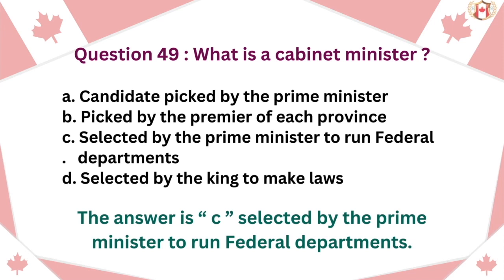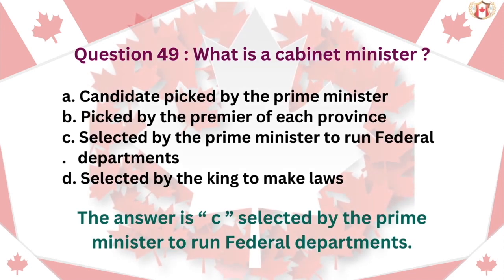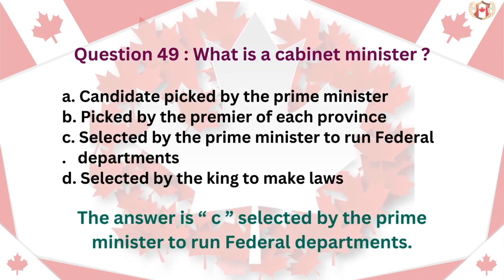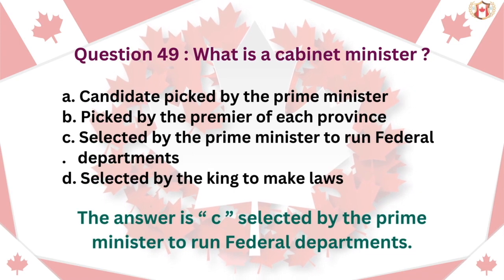Question 49: What is a Cabinet Minister? A. Candidate picked by the Prime Minister, B. Picked by the Premier of each province, C. Selected by the Prime Minister, D. Selected by the King to make laws. The answer is C. Selected by the Prime Minister to run Federal Departments.